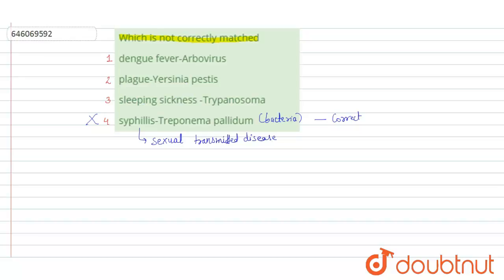If we talk about sleeping sickness and Trypanosoma, sleeping sickness is caused by the protozoan Trypanosoma. So this is also correctly matched. The tsetse fly carries the infection, so this option is also not the answer we are looking for.